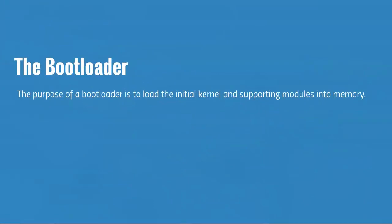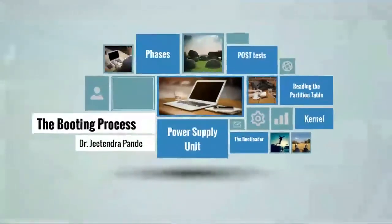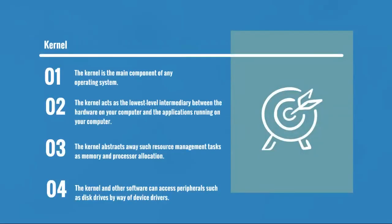Next is the bootloader. The purpose of a bootloader is to load the initial kernel and supporting modules into memory. Next is the kernel. The kernel is the main component of any operating system. The kernel acts as the lowest-level intermediary between the hardware on your computer and the applications running on your computer. The kernel abstracts away resource management tasks such as memory and processor allocation. The kernel and other software can access peripherals such as disk drives by way of device drivers.